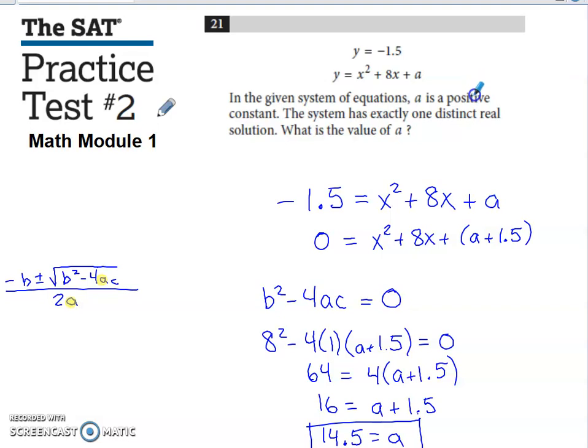If the system doesn't have any real solutions, what's under this root is negative. If the system has two real solutions, what's under this root is positive. If there's only one distinct solution, what's under this root has to be zero, because adding or subtracting zero doesn't give us any new result. It only leaves us with the one result.